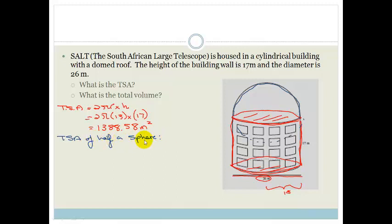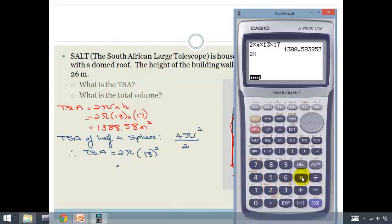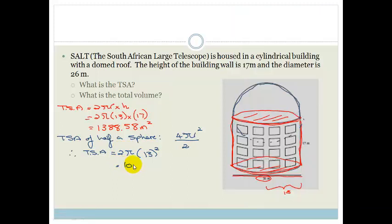We know the total surface area of a full sphere is 4πr². For half a sphere we divide by 2, giving 2πr². With r = 13, that's 2 × π × 13² = 1061.86 meters squared.